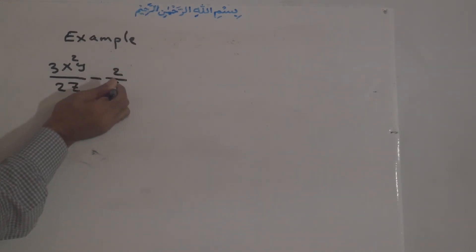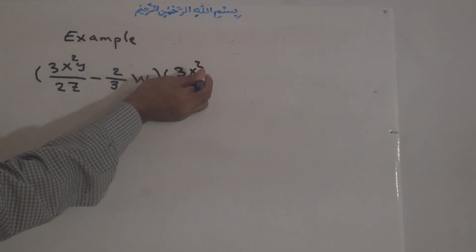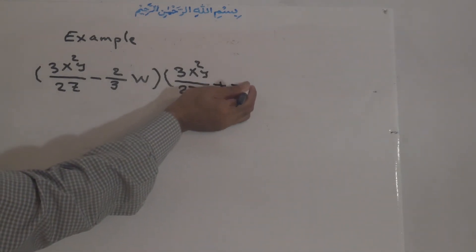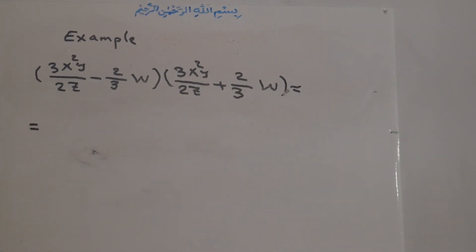Now I will show you an example of the conjugate multiplication identity. Example: 3x to the power of 2y over 2z minus 2 over 3w times 3x to the power of 2y over 2z plus 2 over 3w.